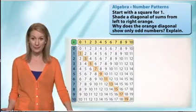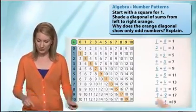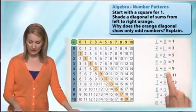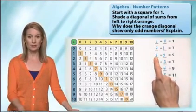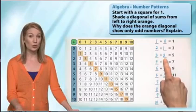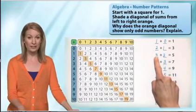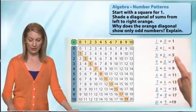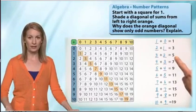So going back, let's start with the three plus two. Do you see that three is odd and two is even? So we have an odd number plus an even number. And look at our result. It's odd.